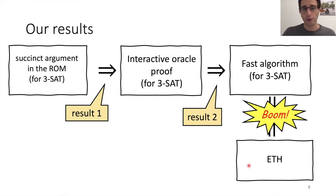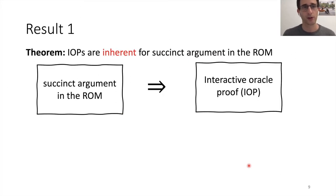So that was an overview of our results. And now I want to tell you about them in slightly more detail. So the first result, IOPs are inherent for succinct arguments in the random oracle model. So you start with a succinct argument, and you can distill an IOP. And not only that, the parameters that you're going to get here are very closely related to the parameters of the succinct argument.